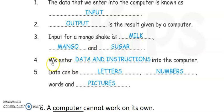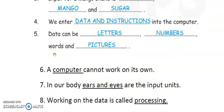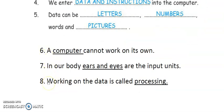Next, number four: We enter data and instructions into the computer. Number five: Data can be letters, numbers, words, and pictures also. These five fill-ups are from the book. These three are extra fill-ups I have given you. Do all the exercises in copy, and up to five only in the book.